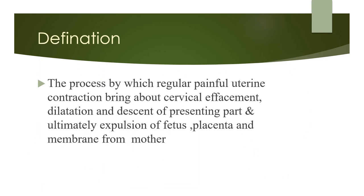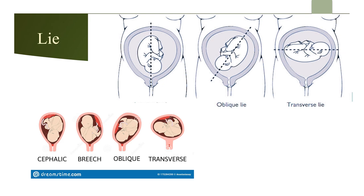Normal labor is defined as the process by which regular, painful, progressive uterine contractions bring about cervical effacement and dilatation, along with descent of the presenting part, ultimately resulting in expulsion of the fetus, placenta, and membranes. The 'lie' refers to the longitudinal relationship of the fetus with the maternal uterus — it can be longitudinal, transverse, or oblique.